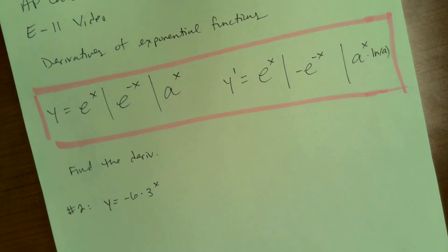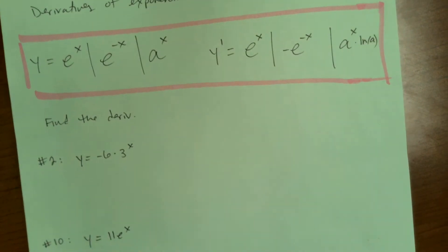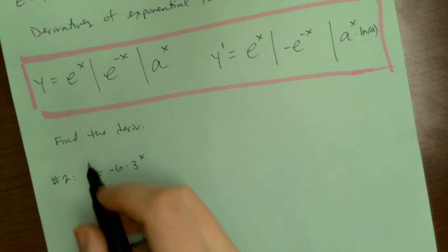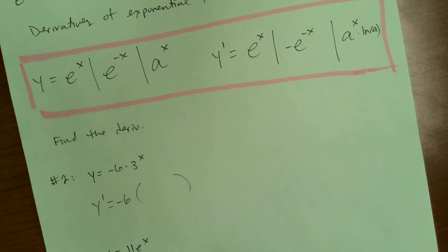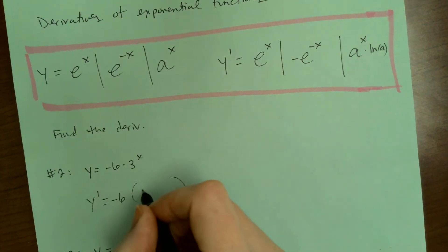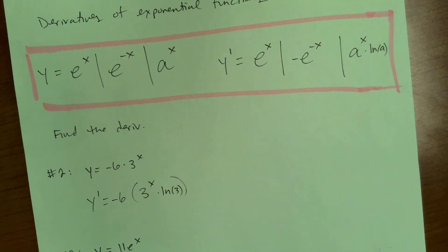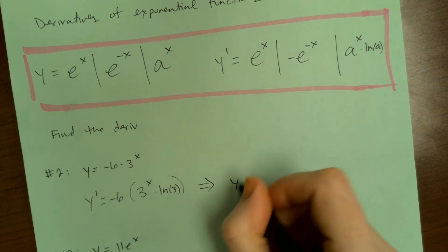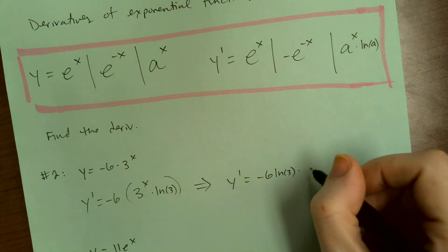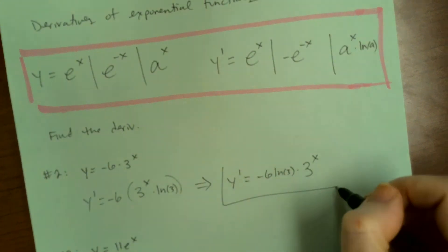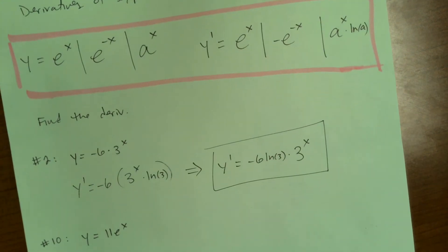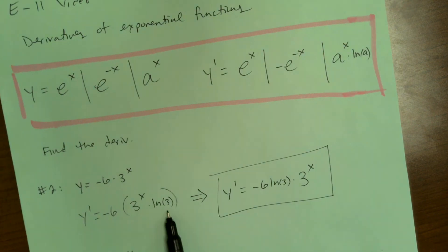Now let's do some examples from your practice. For the first one, negative 6 is a coefficient, so I just bring it down. The derivative of 3 to the x is 3 to the x times natural log of 3. So y prime equals negative 6 times natural log of 3 times 3 to the x. Natural log of 3 is just a number, so I put it out front as part of the coefficient.